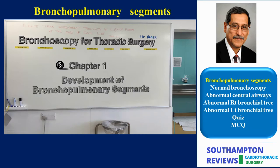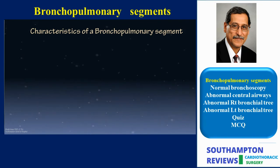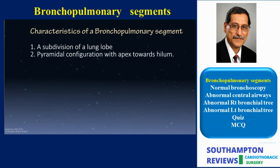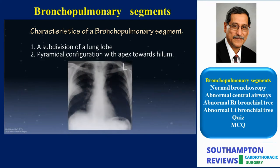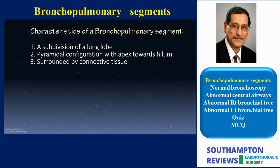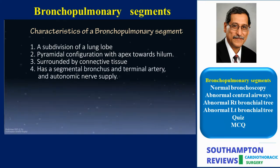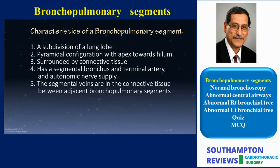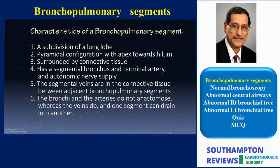Let's define a bronchopulmonary segment so that we know what we're talking about. A bronchopulmonary segment is a subdivision of a lung lobe. It is pyramidal in configuration with the apex towards the hilum, as evidenced by the radiology of an infarcted segment. It is surrounded by connective tissue and has a segmental bronchus, a terminal artery, and autonomic nervous supply. The segmental veins are in the intersegmental connective tissue between adjacent bronchopulmonary segments.